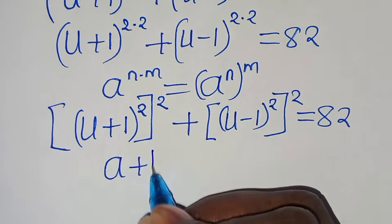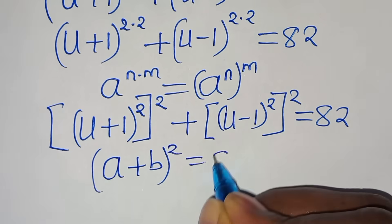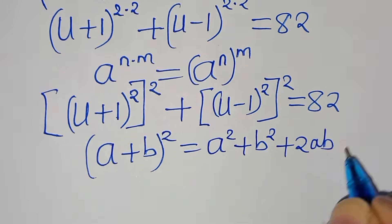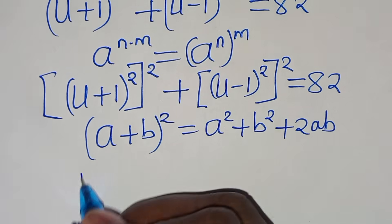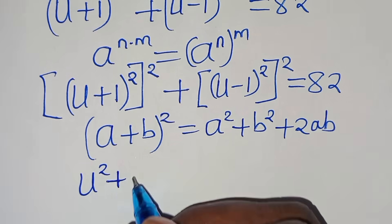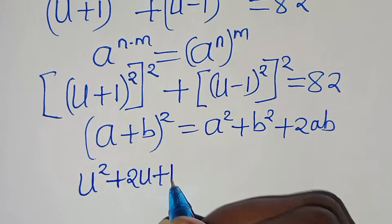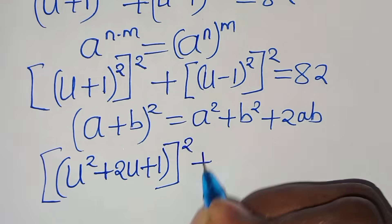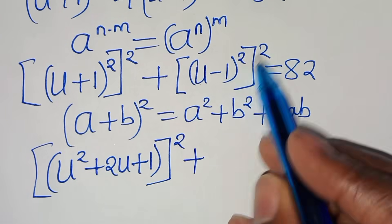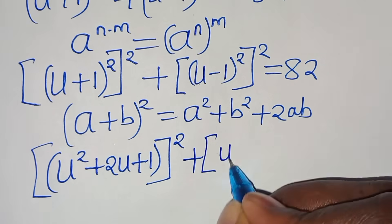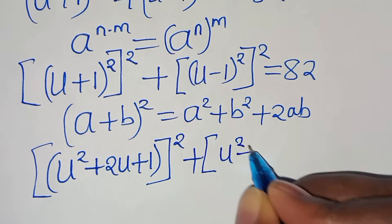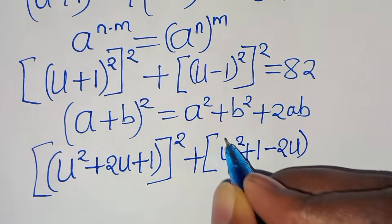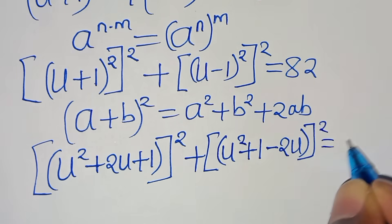Now (u + 1)² is in the form (a + b)², which expands as a² + 2ab + b². Applying this identity gives us (u² + 2u + 1) all squared. Similarly, (u − 1)² expands as (u² − 2u + 1) all squared. So we have (u² + 2u + 1)² + (u² − 2u + 1)² = 82.